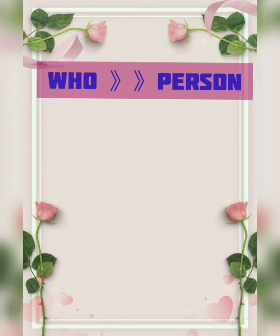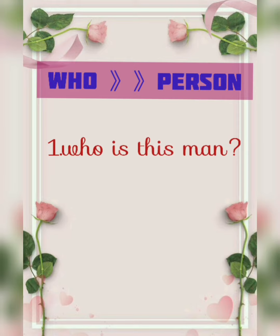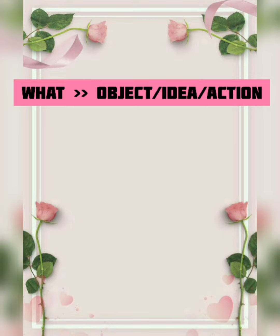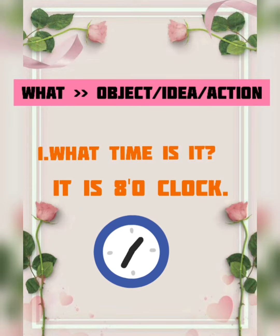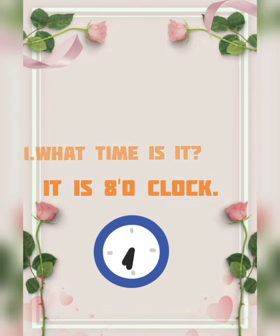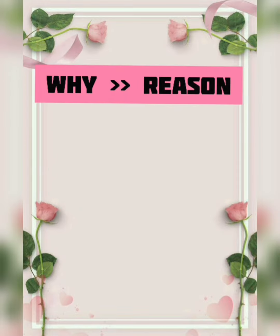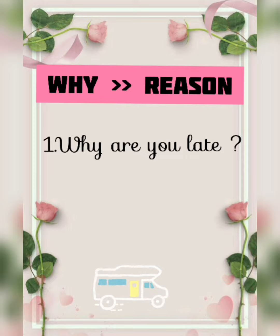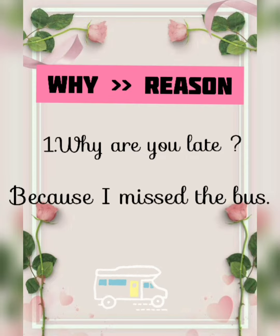Who — when we talk about a person. Example: Who is this man? He is my father. What is asked when we talk about a specific idea, object or an action. Example: What time is it? It is 8 o'clock. Why — when we want to know the reason or explanation, we use why. Example: Why are you late? Because I missed the bus.